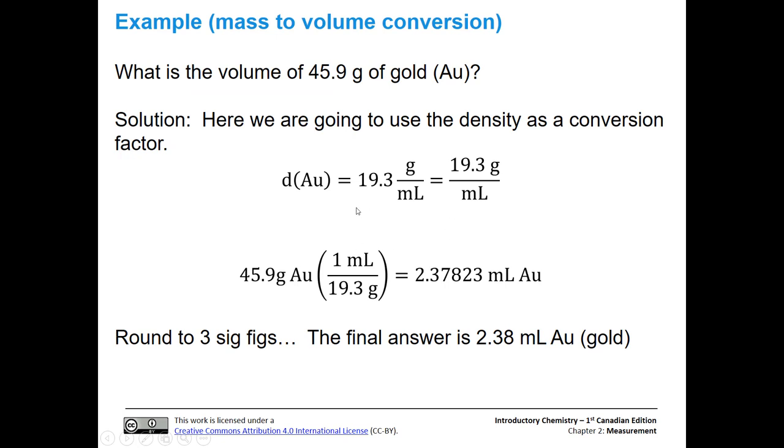Alright, so let's do a problem. We have our density of gold and we're going to write it as a conversion factor. We're going to take our mass of gold and put grams on the bottom, milliliters on the top. So we're going to flip-flop our density: 19.3 grams on the bottom, one milliliter on the top. We're going to divide 45.9 by 19.3 and get 2.37823 milliliters of gold. Now again, we have way too many digits there.